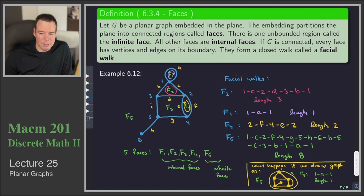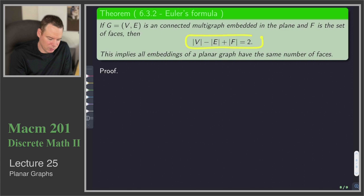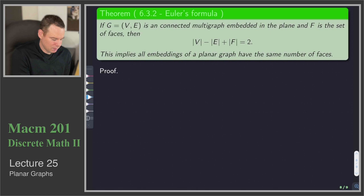The number of faces is related to the number of vertices and edges, and that's this celebrated theorem of Euler. For any connected multigraph which can be embedded in the plane, we have this relationship: the number of vertices minus the number of edges plus the number of faces equals 2. This means all embeddings of a planar graph have the same number of faces. We will end this lecture with a proof of this result using induction on the number of edges.